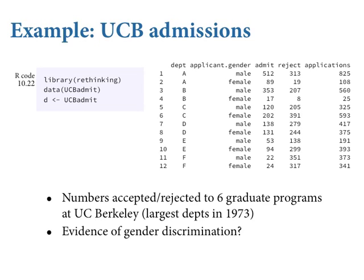These data are quite simple. We've got six departments, two rows for each — one for male applications, one for female applications. The outcome variable is admit — the number admitted out of the total applications, which is just the sum of admit and reject. We're going to assume that every application is independent of all the others, which is a bad assumption given that departments have cohort size goals, but it'll get the point across at the first level of analysis.